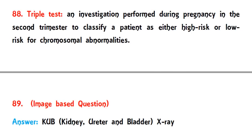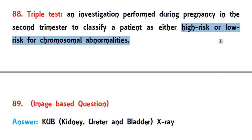Question 88 is related to the triple test — an investigation performed during the second trimester of pregnancy to classify the patient as either high risk or low risk for chromosomal abnormalities. It is mainly used for Down syndrome identification.